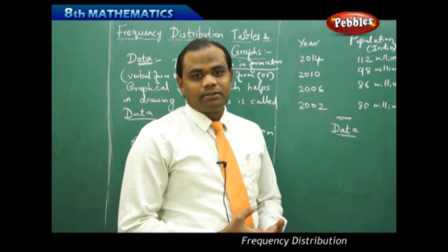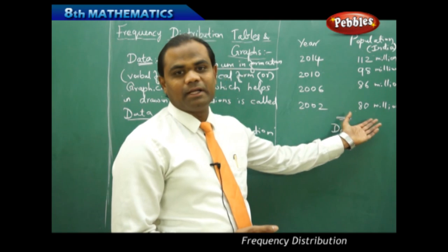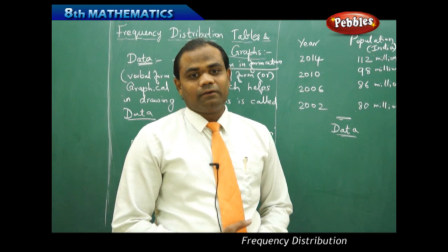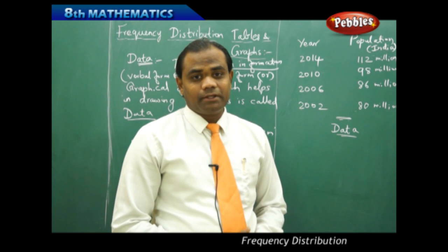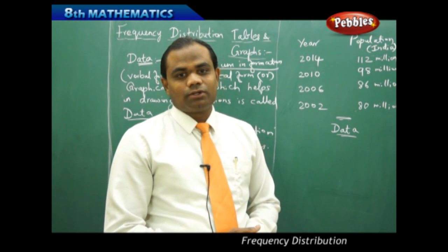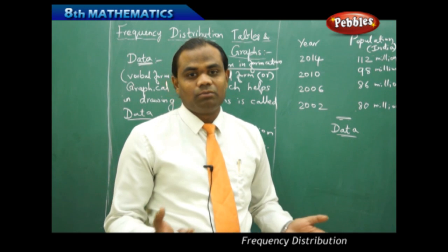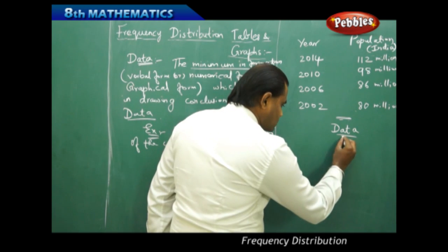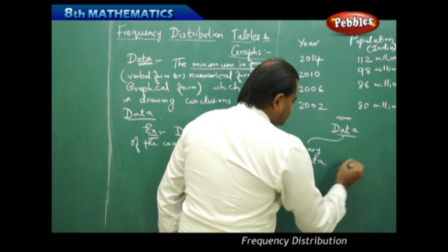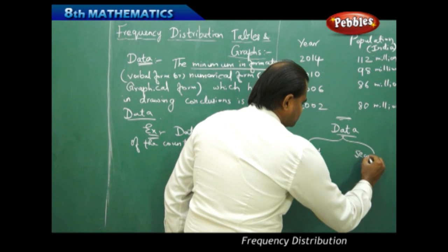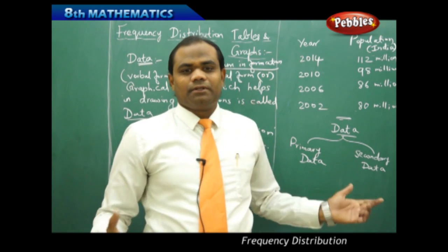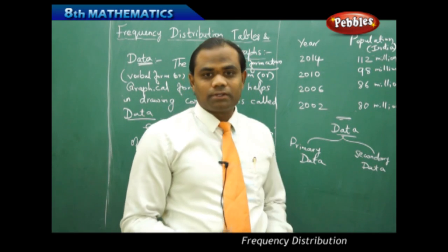As we have discussed the definition of data and the example of population of a country every four years, there are two types of data which are taken into consideration. Understanding the difference between these two types is very important because these are the two basic things through which we understand statistics better. The two types are primary data and secondary data.